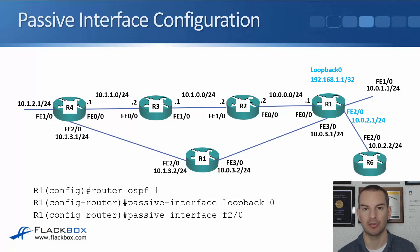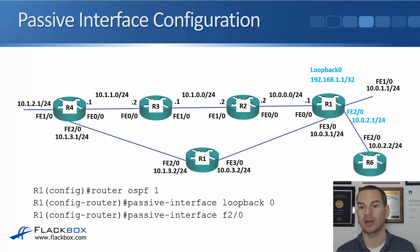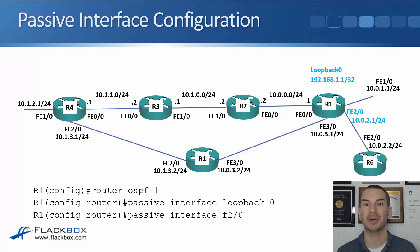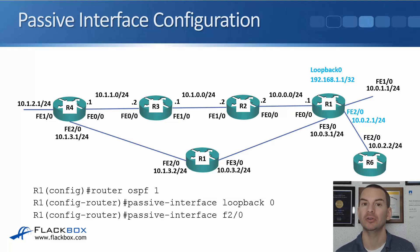Next up is passive interfaces. If you configure a passive interface, it will be advertised in OSPF, so other routers will learn how to get to that network, but the interface itself will not try to form any adjacencies and it won't give out any internal information. In our example, router R1 has a loopback interface, and on interface FastEthernet 2.0 it's connected to R6, which belongs to another organization. It's best practice to configure loopbacks as passive interfaces — they're not physical interfaces, so there can't be a physical router on the other end to form an adjacency with, making it more efficient.